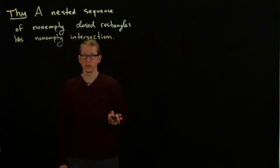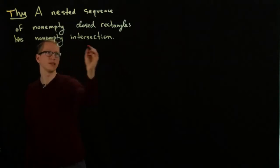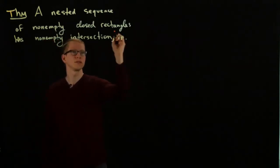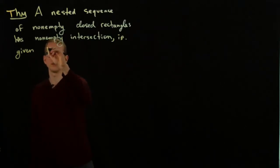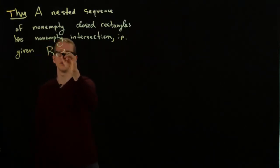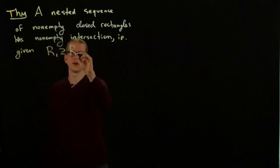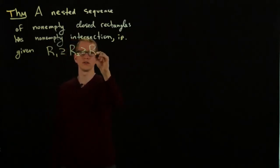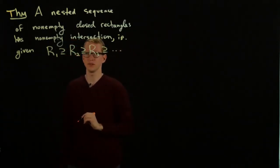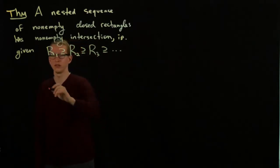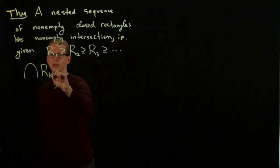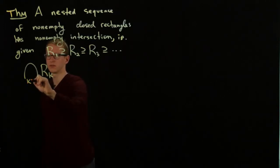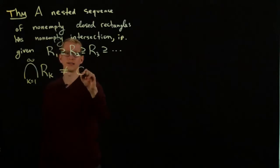In terms of formulas, we can write this as follows. Given a nested sequence of closed rectangles R1 ⊇ R2 ⊇ R3 ⊇ ... infinitely many times, we can take the intersection of all of these closed rectangles, and that intersection is not empty.